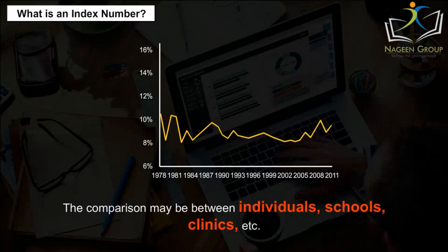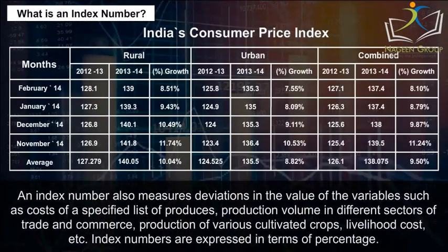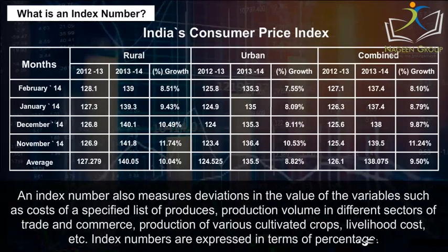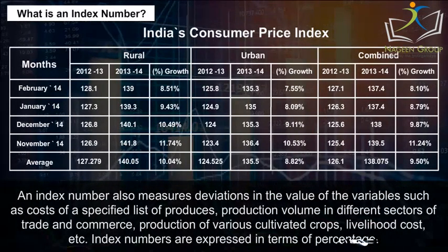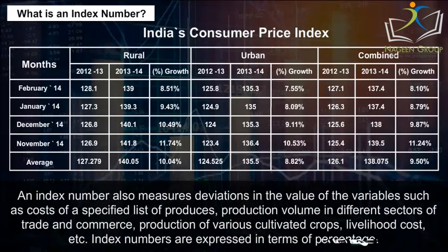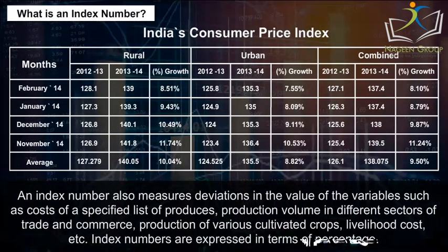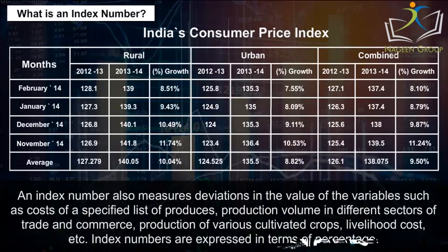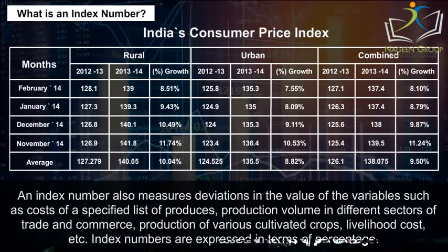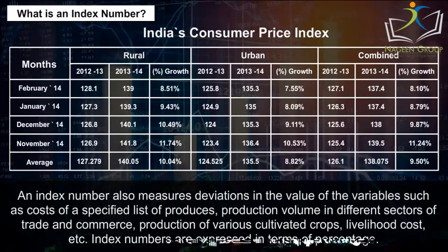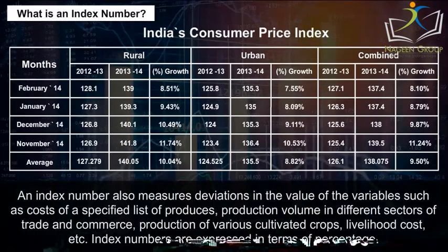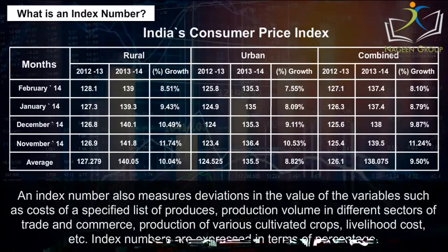The comparison may be between individuals, schools, clinics, etc. An index number also measures deviations in the value of variables such as costs of a specified list of producers, production volume in different sectors of trade and commerce, production of various cultivated crops, livelihood cost, etc. Index numbers are expressed in terms of percentage.